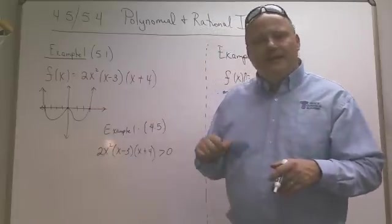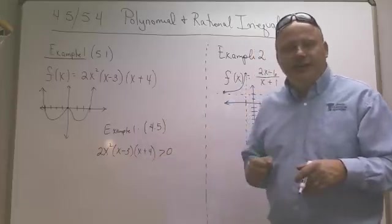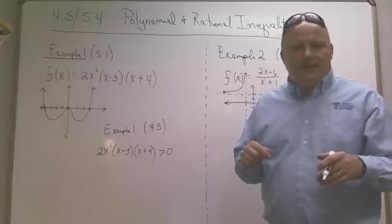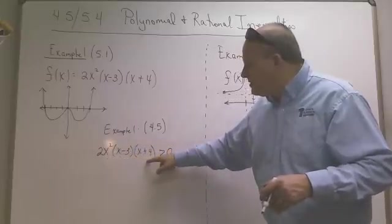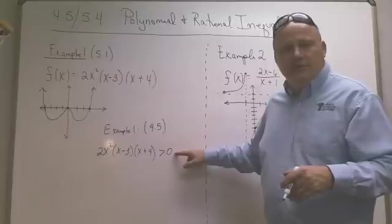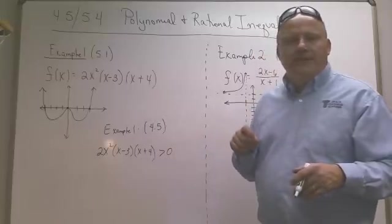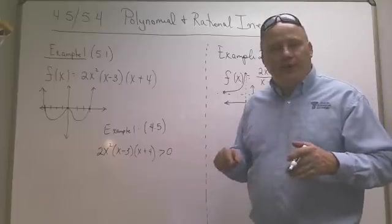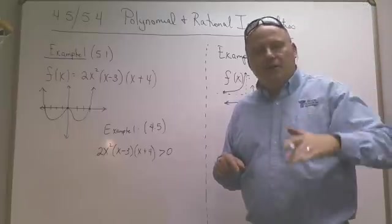Now, in 4.5, you might see a problem that looks like this. It's actually taking part of the question and asking about it. The same function, but they're saying, when is this function greater than 0? They're asking you to look at the graph and determine where the graph is greater than 0. Greater than 0 is above the axis, and less than 0 is below the axis.